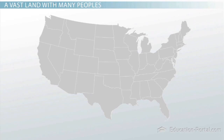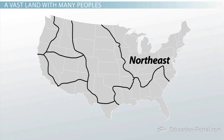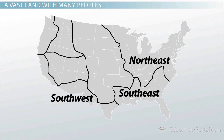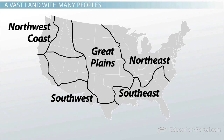We'll be looking at the following cultural groups: Northeast, Southeast, Southwest, Northwest Coast, and Great Plains. There are a few more groupings, but this is a manageable list which should illustrate how unique these different groups are.